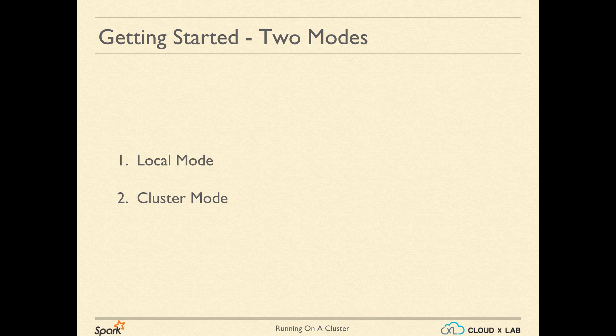Based on the resource manager, Spark can run in two modes: local mode and cluster mode. The way we specify the resource manager is by a command line option called --master.